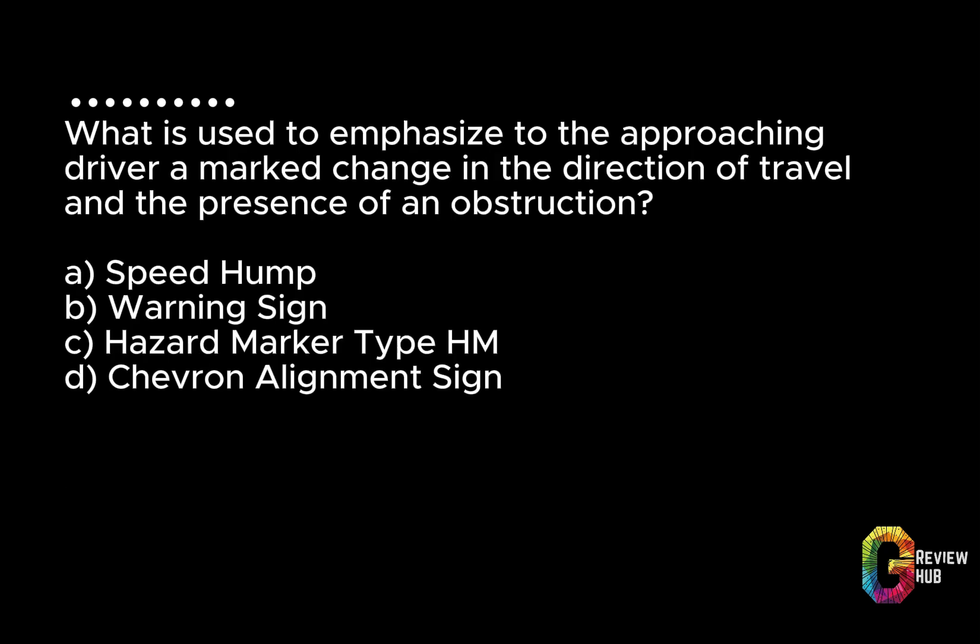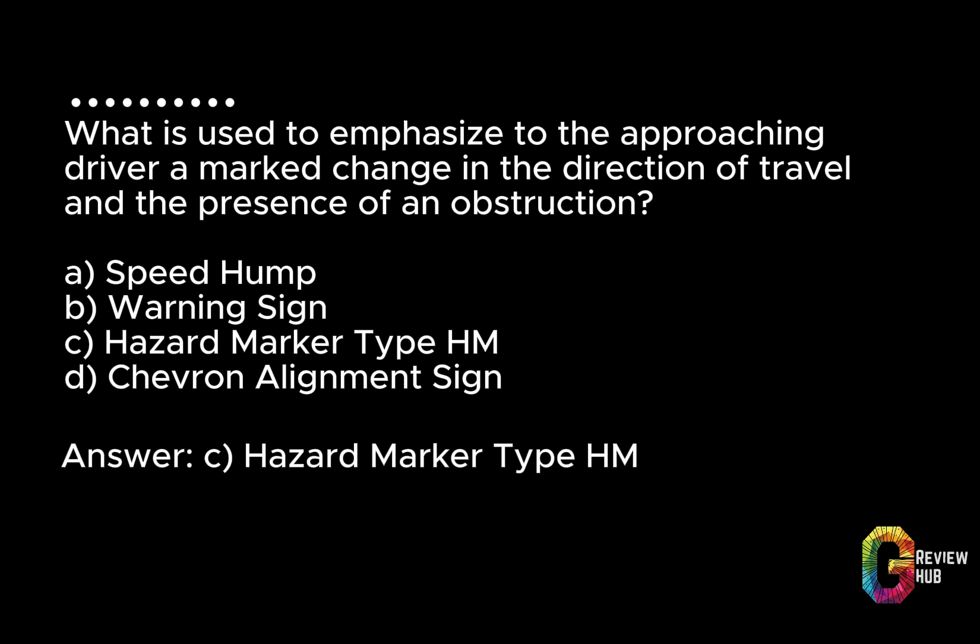What is used to emphasize to the approaching driver a marked change in the direction of travel and the presence of an obstruction? A. Speed hump. B. Warning sign. C. Hazard marker type HM. D. Chevron alignment sign. Answer: C. Hazard marker type HM.